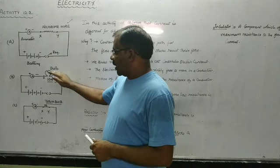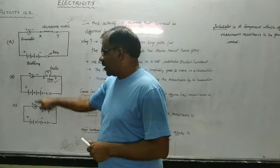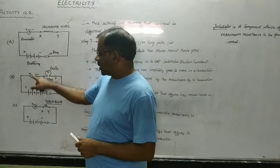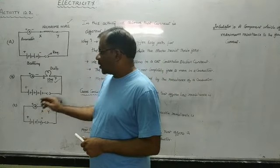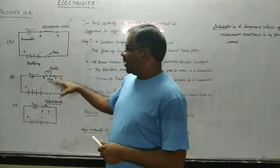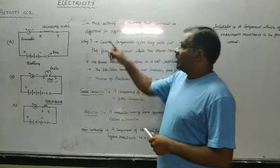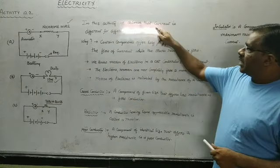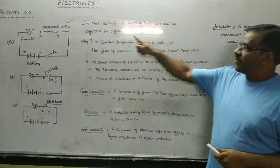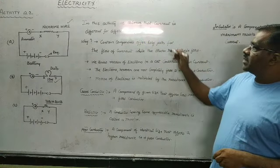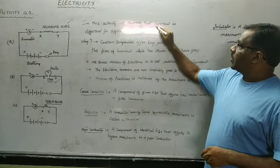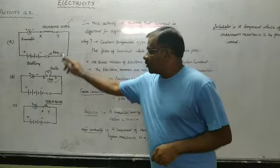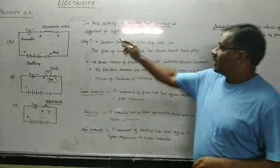Different components will consume different amounts of current. That means the amount of current in all three ammeters will definitely be different. What we observe in this activity is that current is different for different components — the amount of current flowing through each circuit will be different.